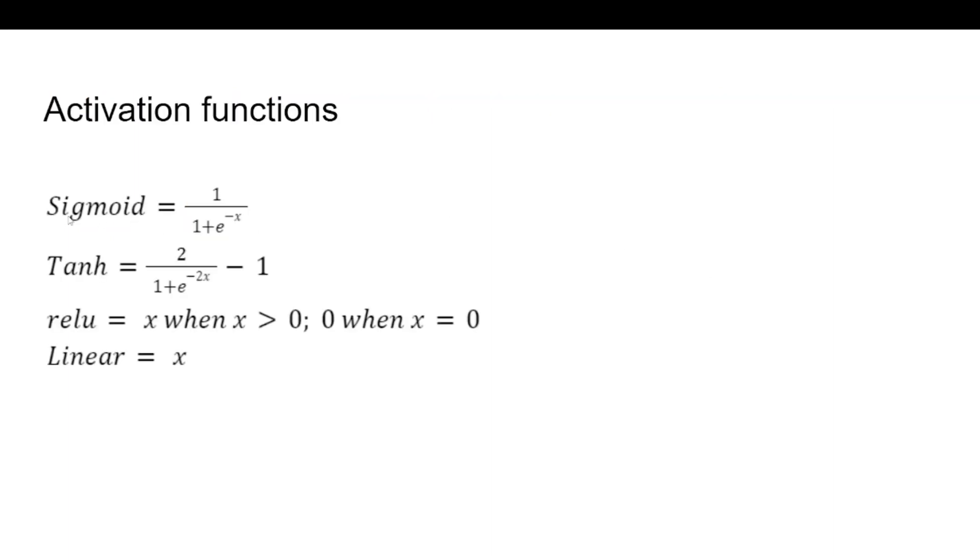For instance, there is a sigmoid one, a tanh one, a ReLU one where basically when the input is greater than zero you return the value of the input and when it's less than zero you just return zero, and a linear one which just returns x.